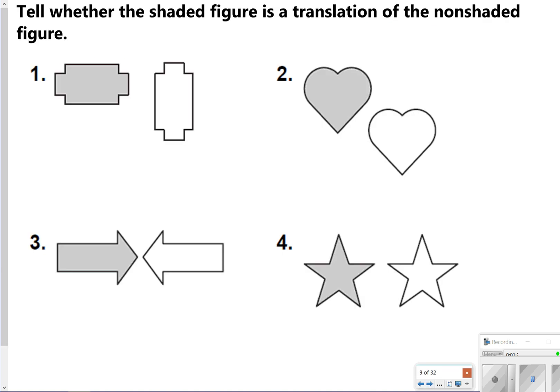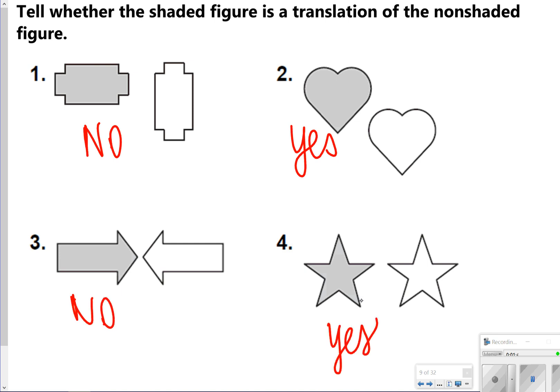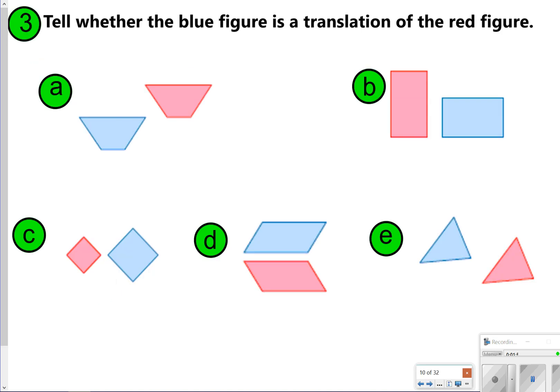The first few we're going to do together — you're just going to say yes or no for whether it is a translation. Number one is no because it rotated. Number two is yes because it did slide. Number three is no because it was reflected. And number four is also yes because it did slide. Number four could technically be a reflection as well, but since the shape is symmetrical, you can count it as a translation. These are what you're going to try — pause the video and answer yes or no for 3A through 3E, then click play to check your work.